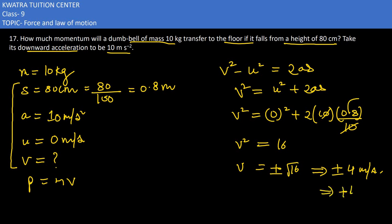And we need to find the momentum which is p is equal to mv. m in this case is 10, v in this case is 4, so you would get 40 kg meter per second.